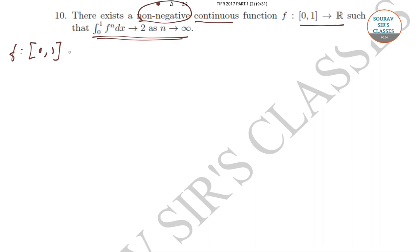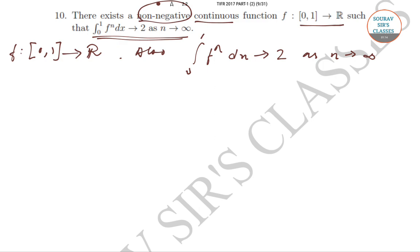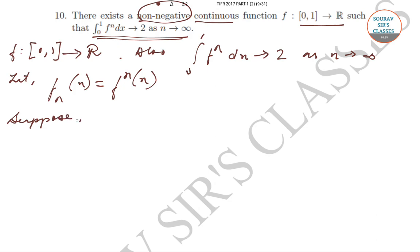It has been given that f goes from [0,1] to the set R. Also it has been said that the integration from 0 to 1 of f^n dx tends to 0 as n tends to infinity. For notational purpose, let f_n(x) = f^n(x). Now suppose |f| < 1; therefore f^n(x) tends to 0 for all x.